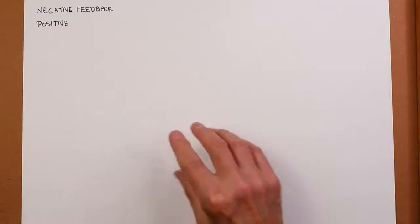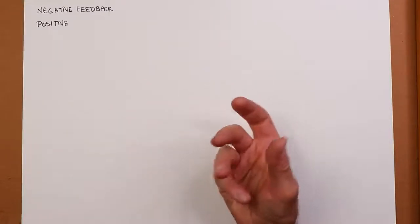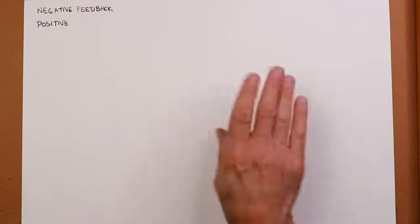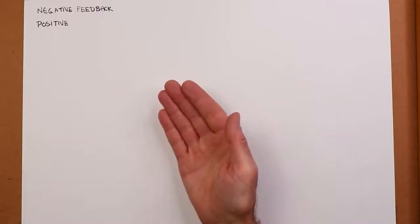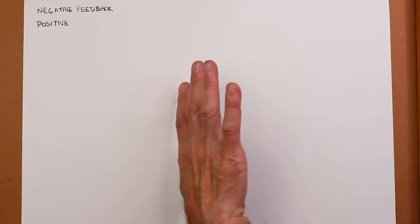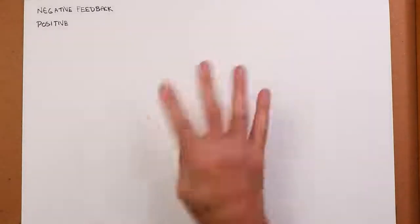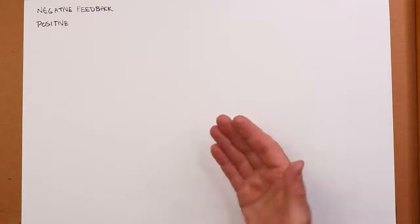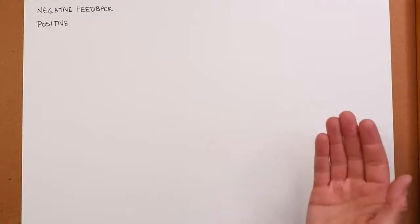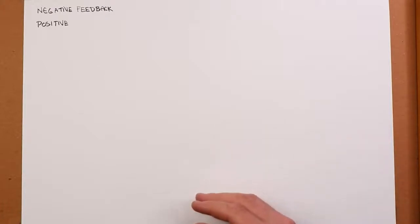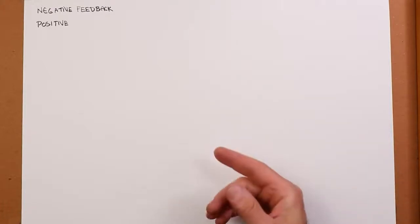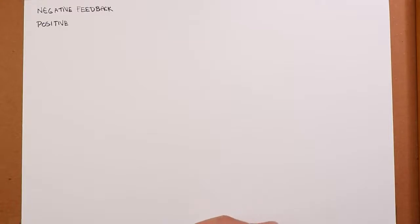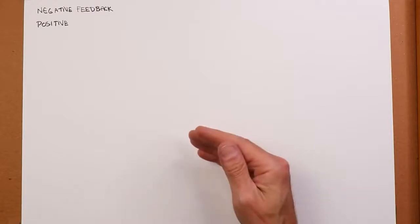Both require a signal — some kind of information — being taken from the output and sent back to the input. With negative feedback, there's an inversion involved; in other words, an opposite action. A good example would be driving down the highway trying to keep a set speed — say 65 miles an hour. If you see on the speedometer that you're going a little slow, you do the opposite: you put your foot on the gas pedal to go a little faster.